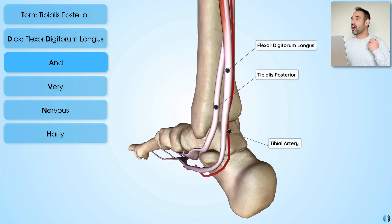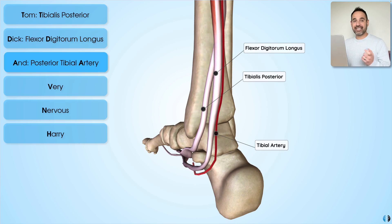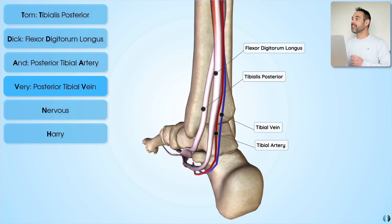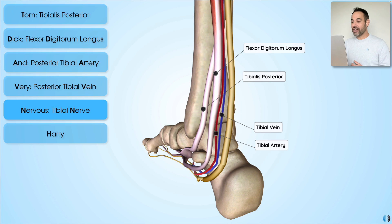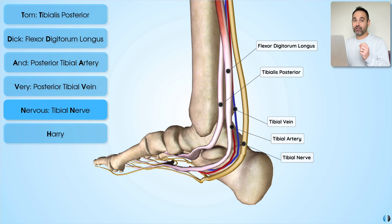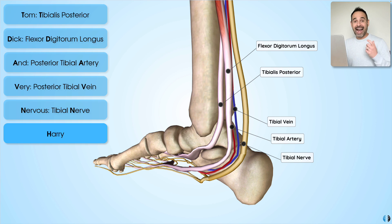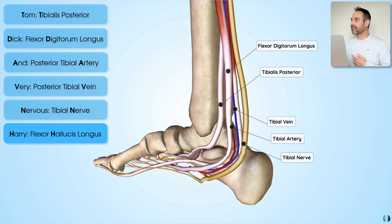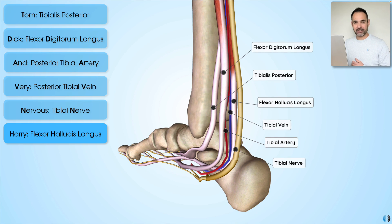And stands for artery — in particular the tibial artery. Very stands for vein — in particular the tibial vein. Nervous stands for nerve — in particular the tibial nerve, which is the crucial structure we consider in tarsal tunnel syndrome. And finally Harry stands for flexor hallucis longus.